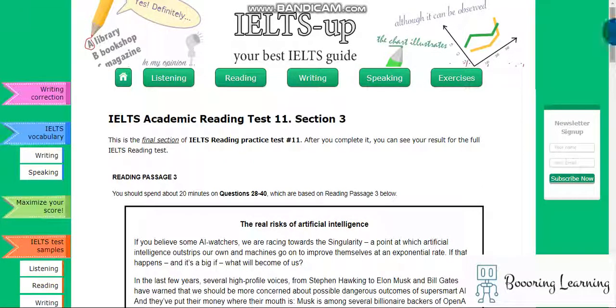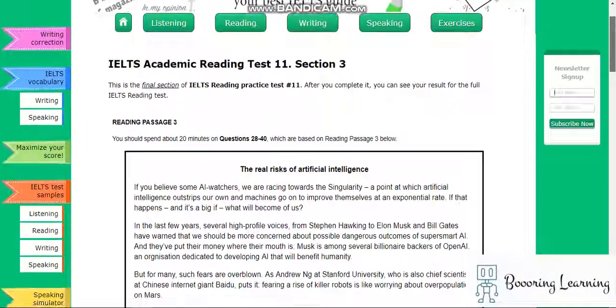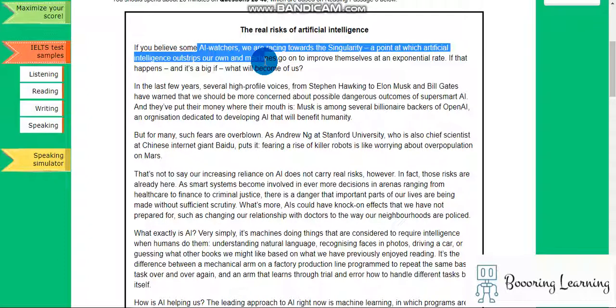Hi hello, it is us, reading section test 11 section 3: The Real Risks of Artificial Intelligence. If you believe some watchers, you're racing towards the singularity, a point at which artificial intelligence outstrips our own and machines go on to improve themselves at an exponential rate. If that happens, and it's a big what, what will become of us?